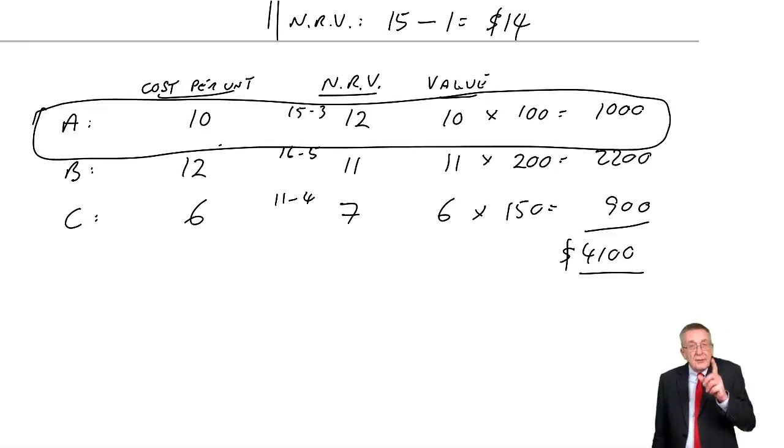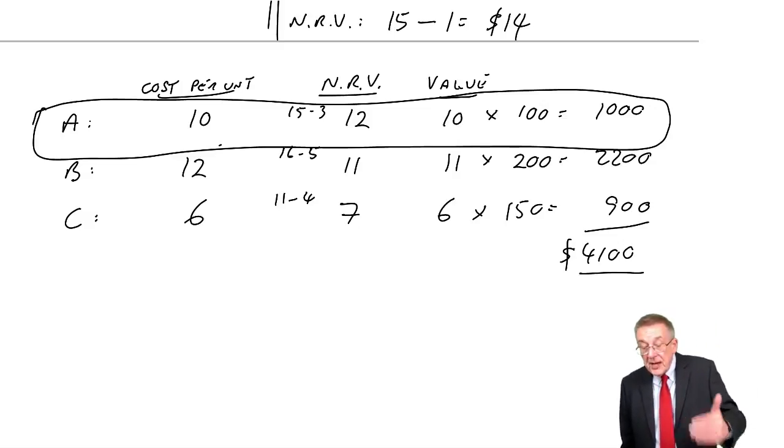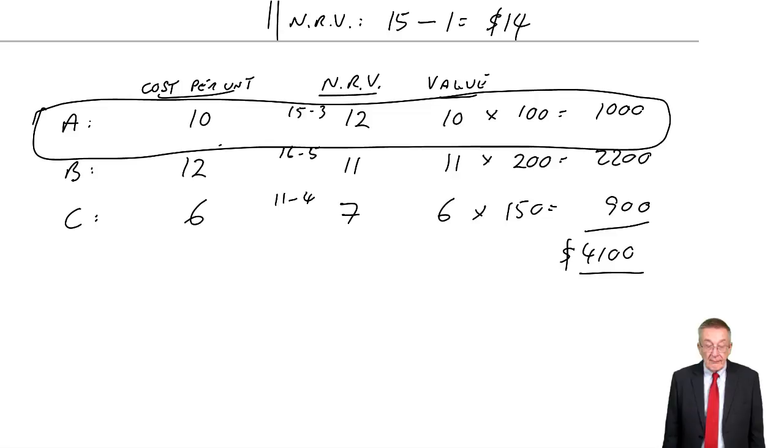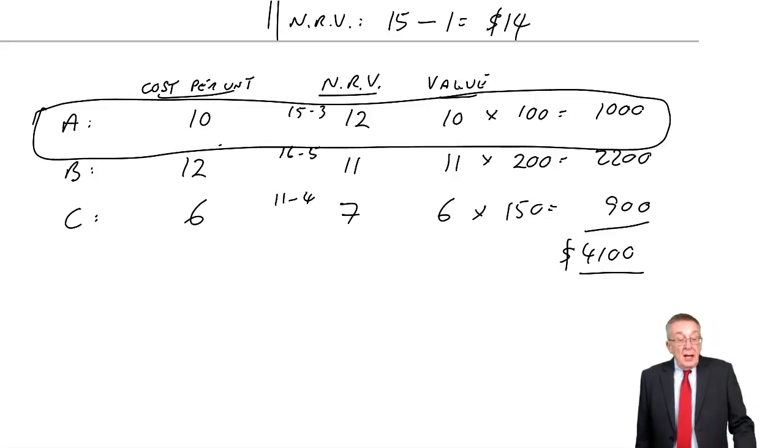But if one of them, if the other one was damaged, and its net realizable value was only $6, that one unit would be valued at $6, even though the other 99 would be valued at $10.